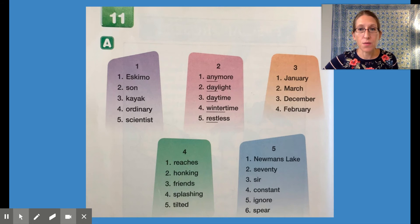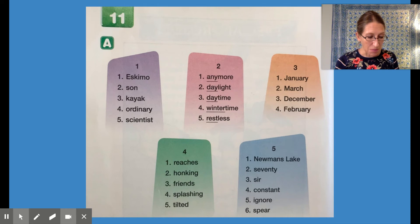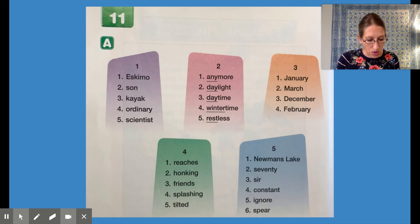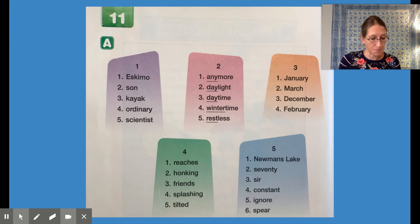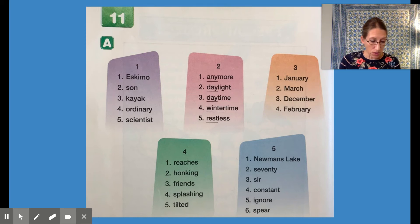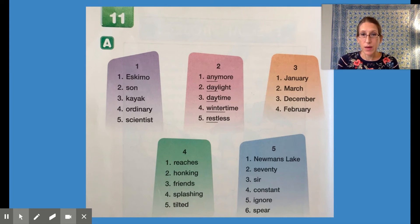Please put your finger on word one in list number one. Word one is Eskimo. Eskimos are native people that live in Alaska and Canada. You'll read a story about Eskimos starting on the next lesson. Word two is son. If parents have a male child, that child is the parent's son. And if the parents have a female child, that child is called a daughter. Nice job.